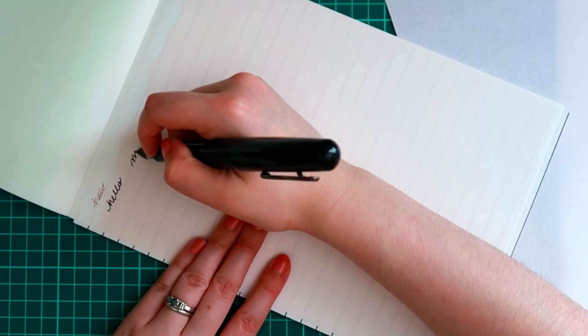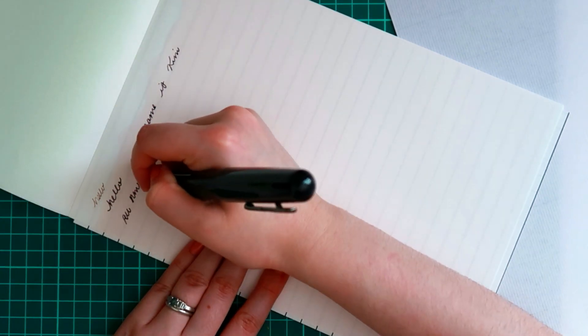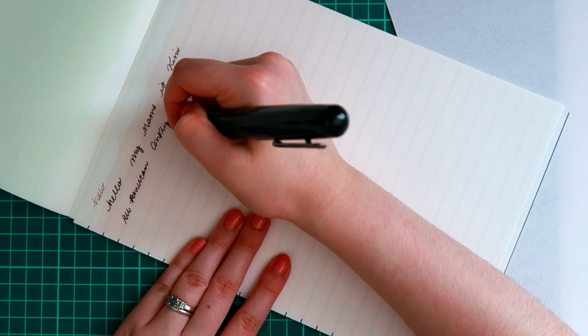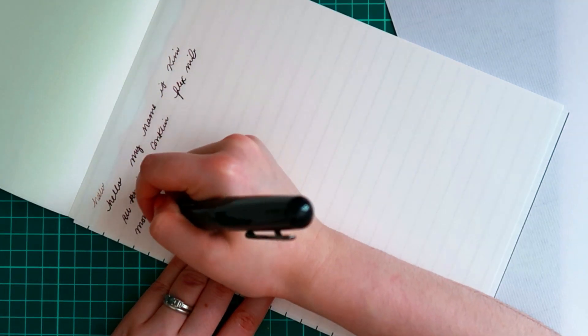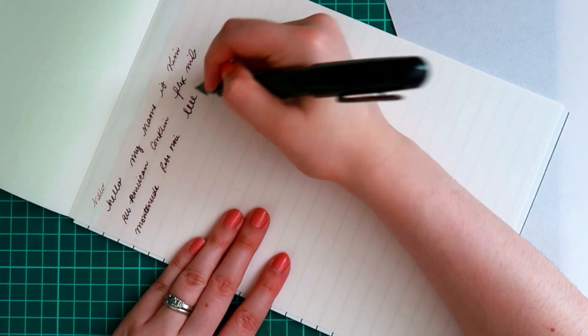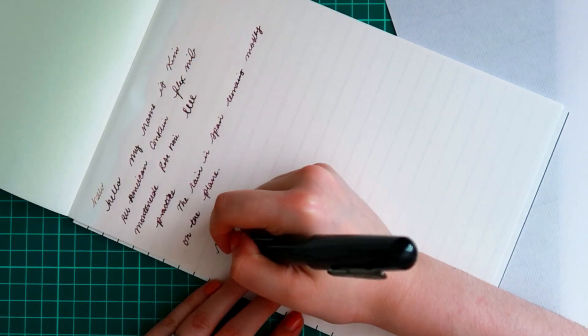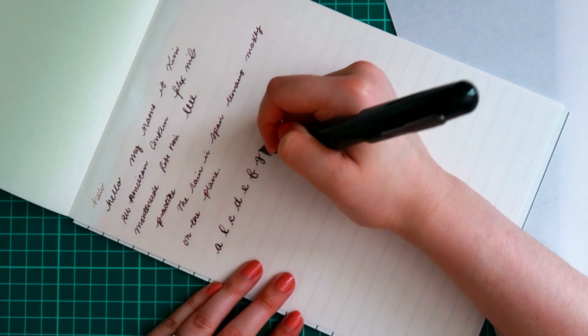This pad of paper also comes with a line guide paper, which I really love because I cannot write straight on blank paper. I need to have a guide, and I love using my Conklin All-American because this flex nib makes my handwriting feel all fancy and pretty.